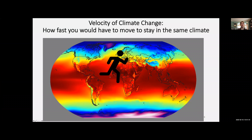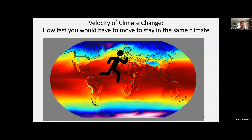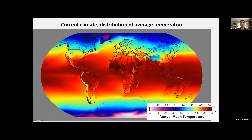The velocity of climate change is how fast you have to move to stay at the same climate. Velocity is a motion term — miles per hour, feet per day, kilometers per second — something with space in the numerator and time in the denominator. The first thing to understand is that we have a distribution of temperature in our current climate. This map shows the local average temperature at each location across the globe, averaged over the entire year.